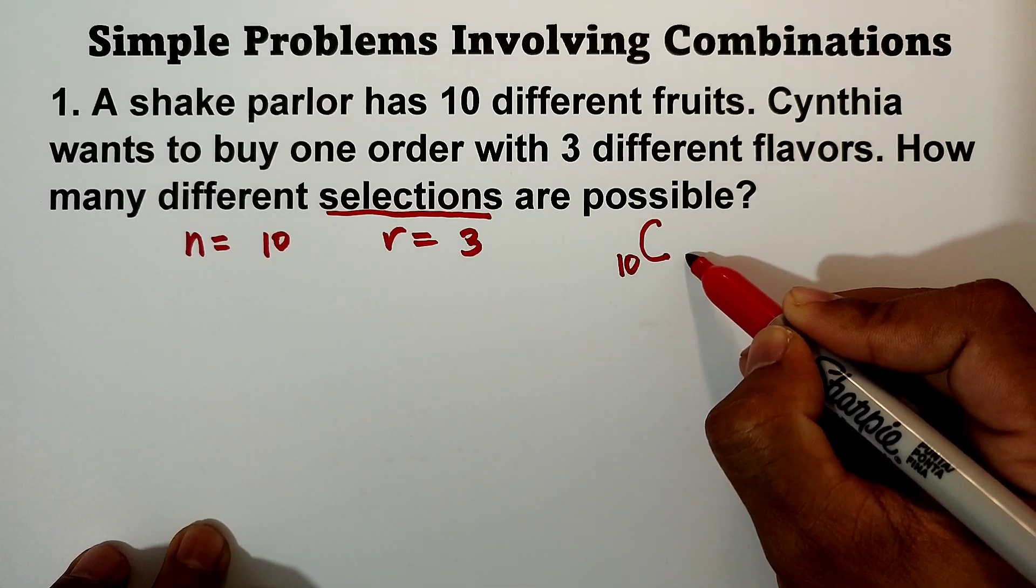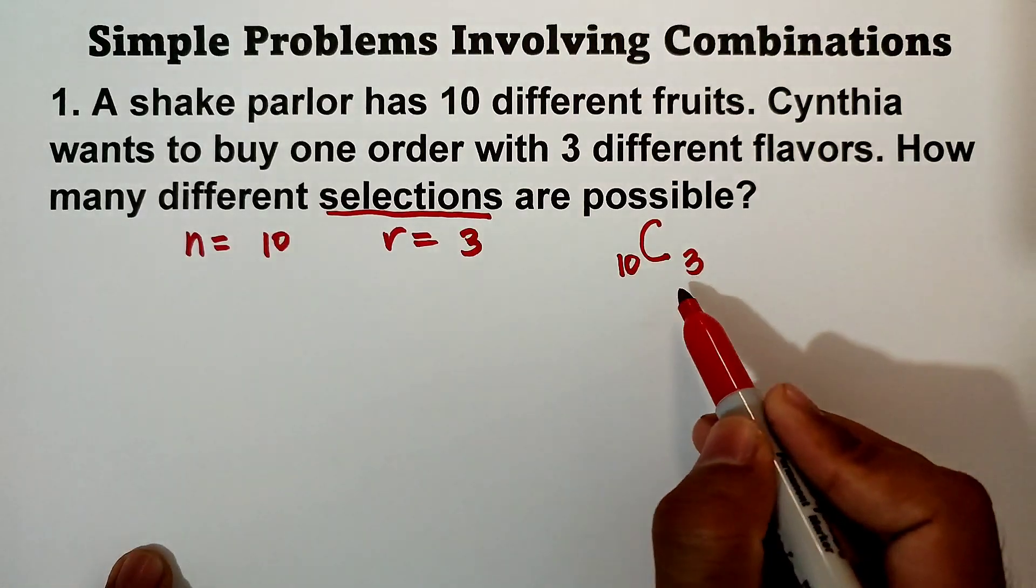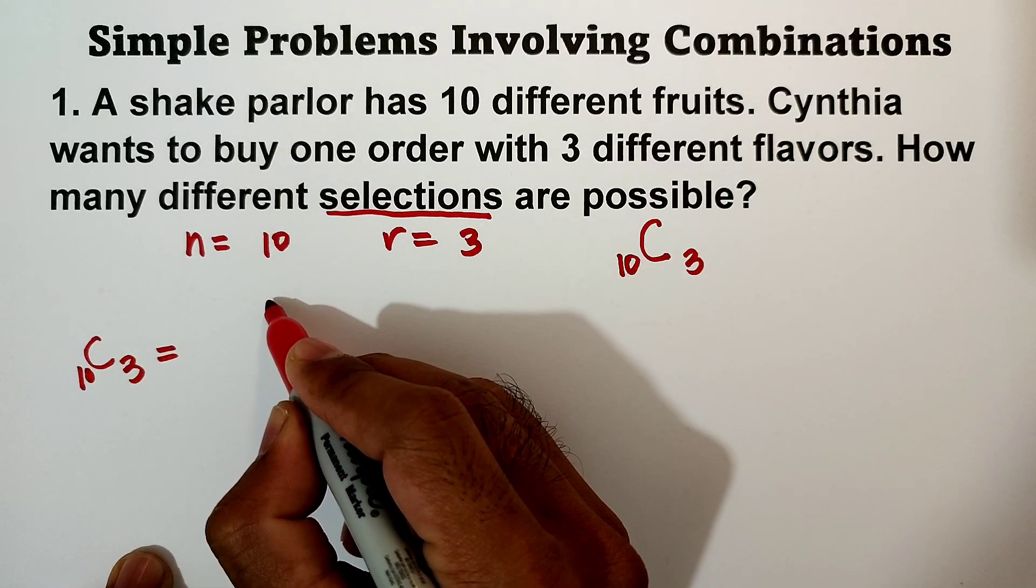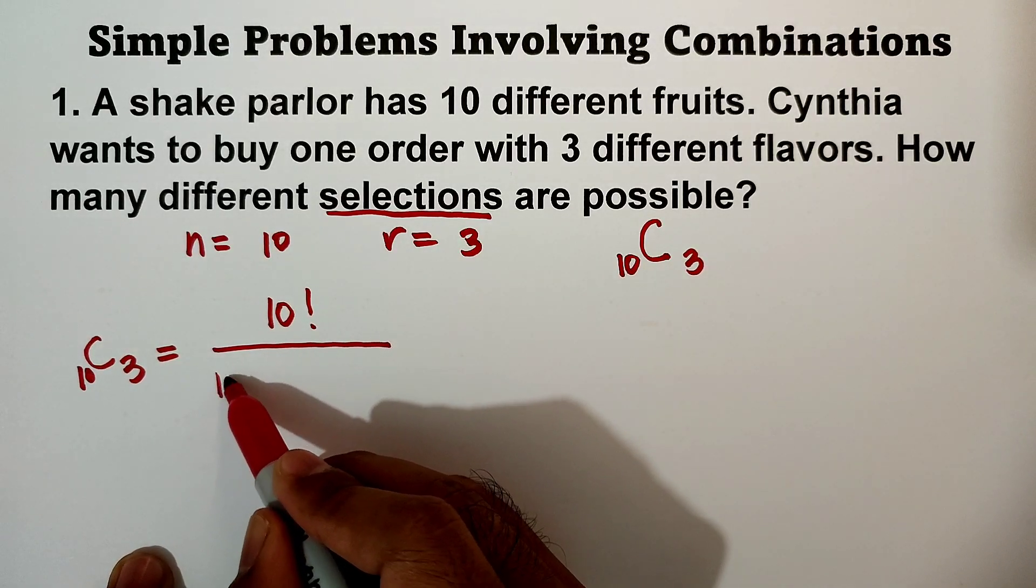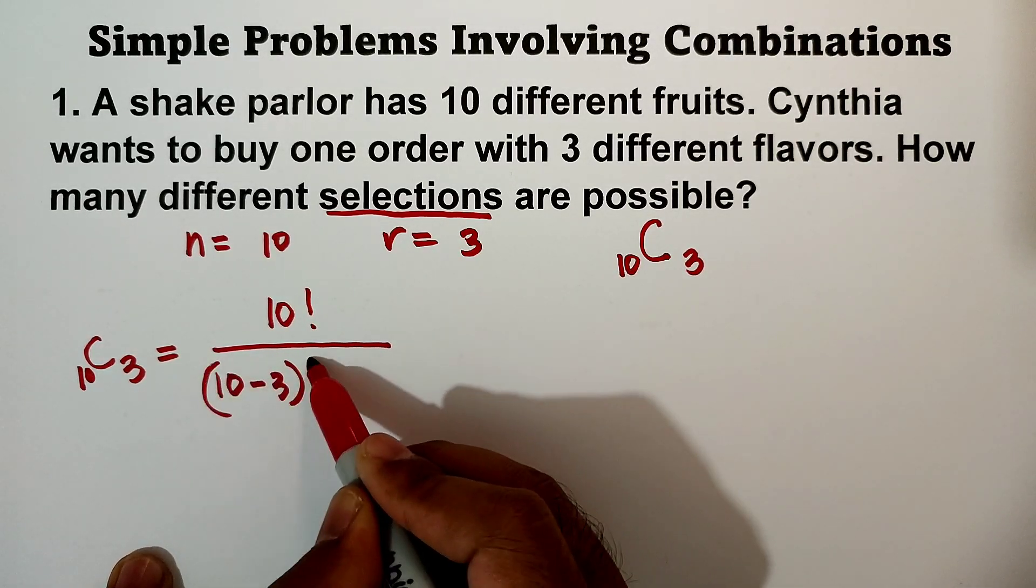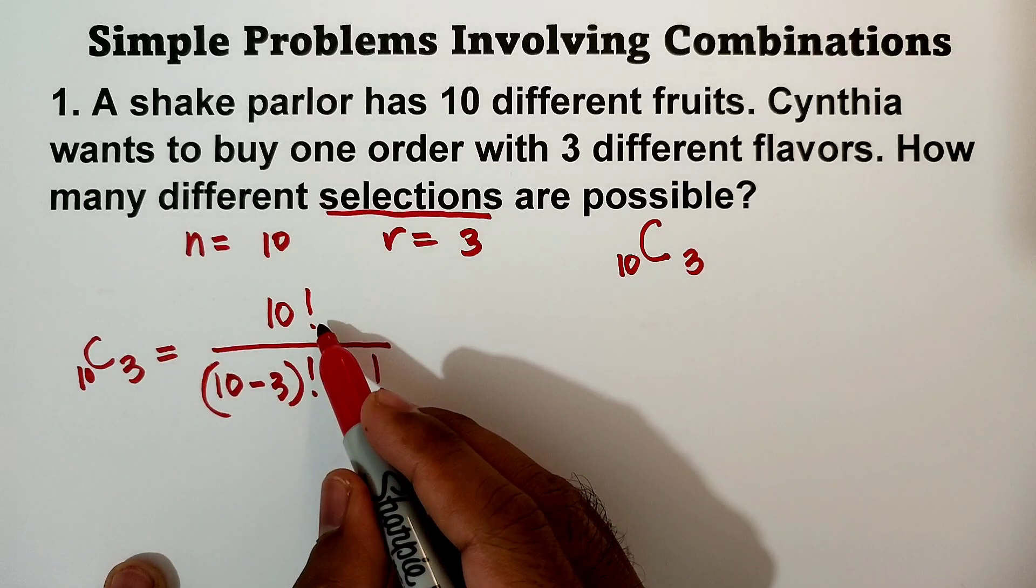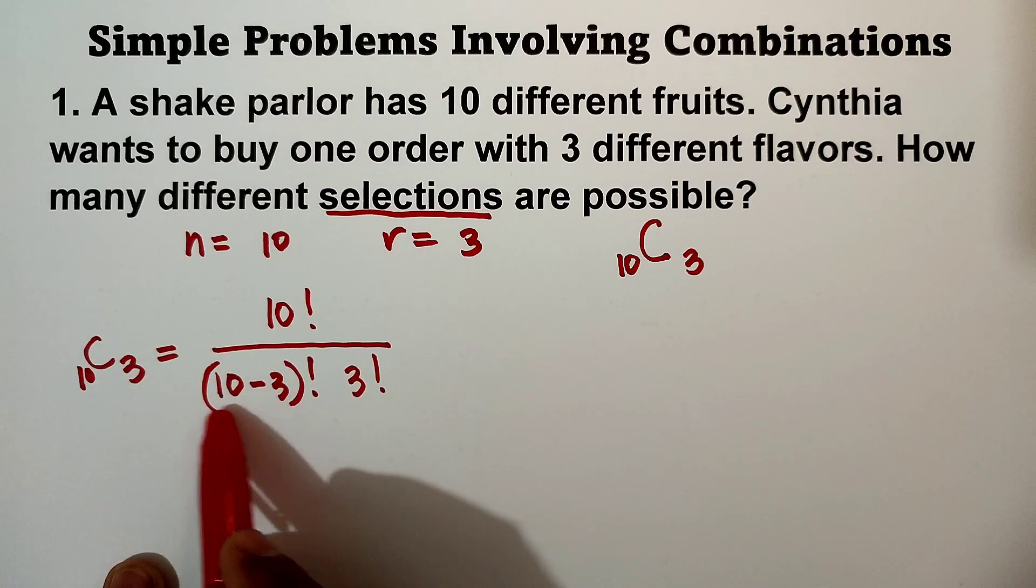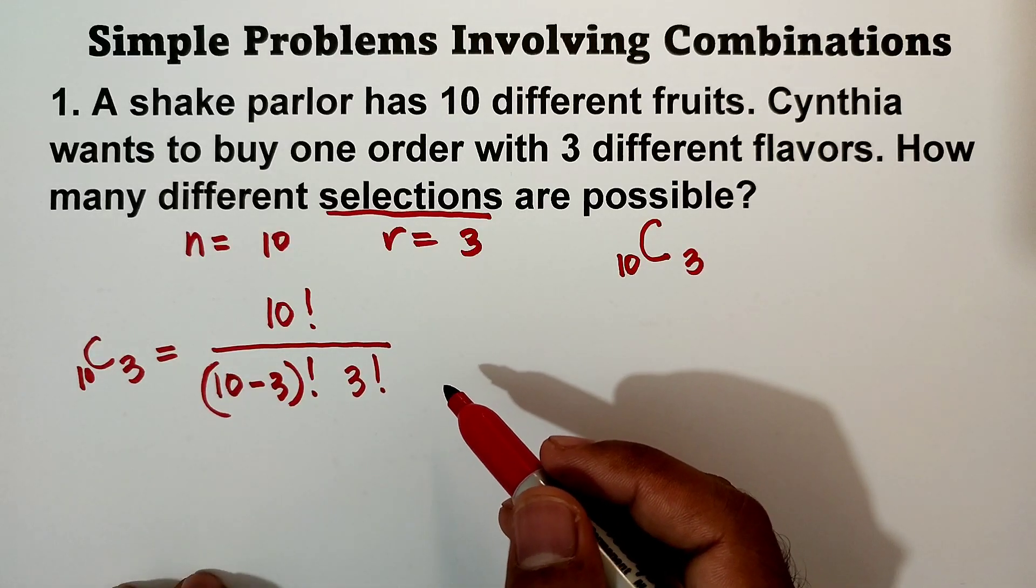Okay, so we can apply the longest formula and then I'll show you the short method. So our formula: combination of 10 taken 3 is equal to n factorial, so that is 10 factorial all over 10 minus 3 factorial times 3 factorial. So this is our formula, right? n factorial all over n minus r times r factorial. So we subtract the 10 and 3 and then multiply by 3 in the denominator.